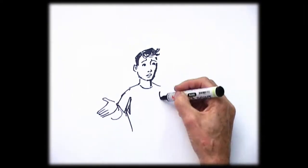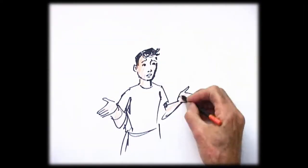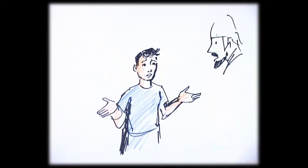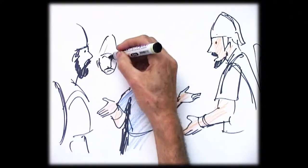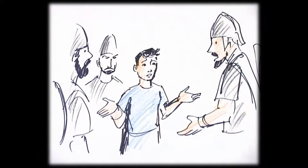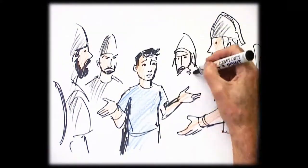David asked some soldiers standing nearby. What will a man get for killing this Philistine and stopping him from insulting our people? Who does that worthless Philistine think he is? He's making fun of the army of the living God.